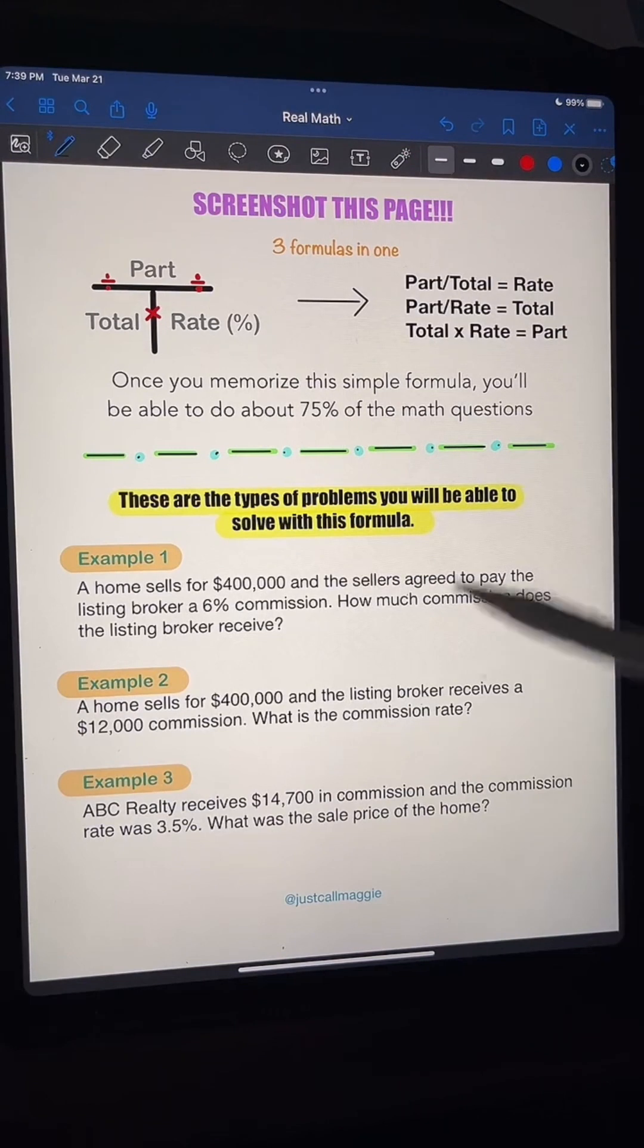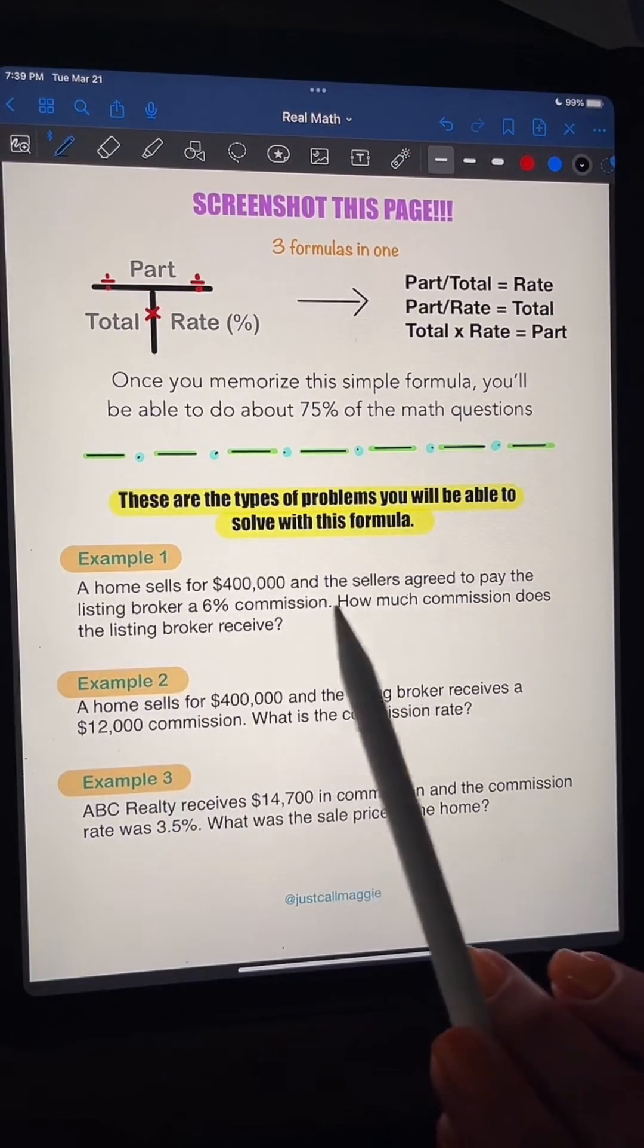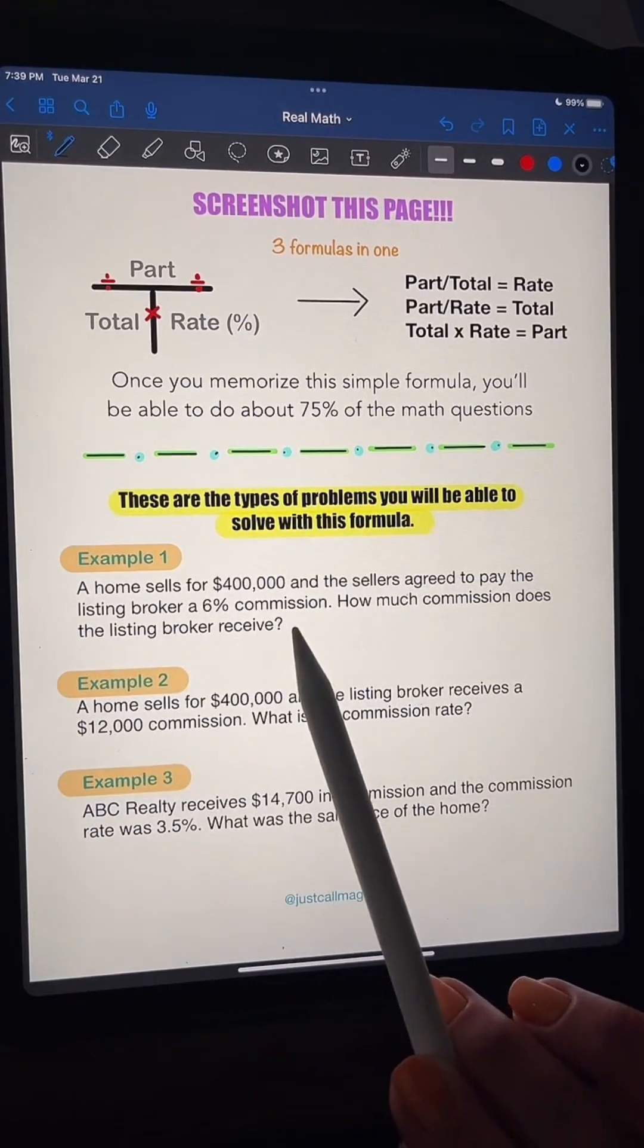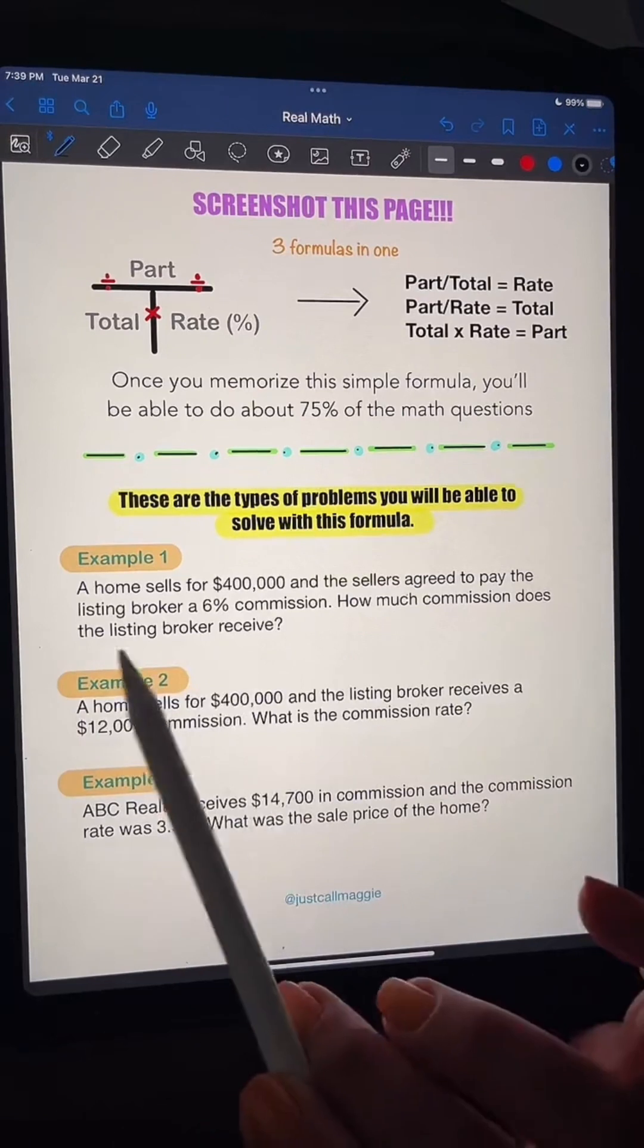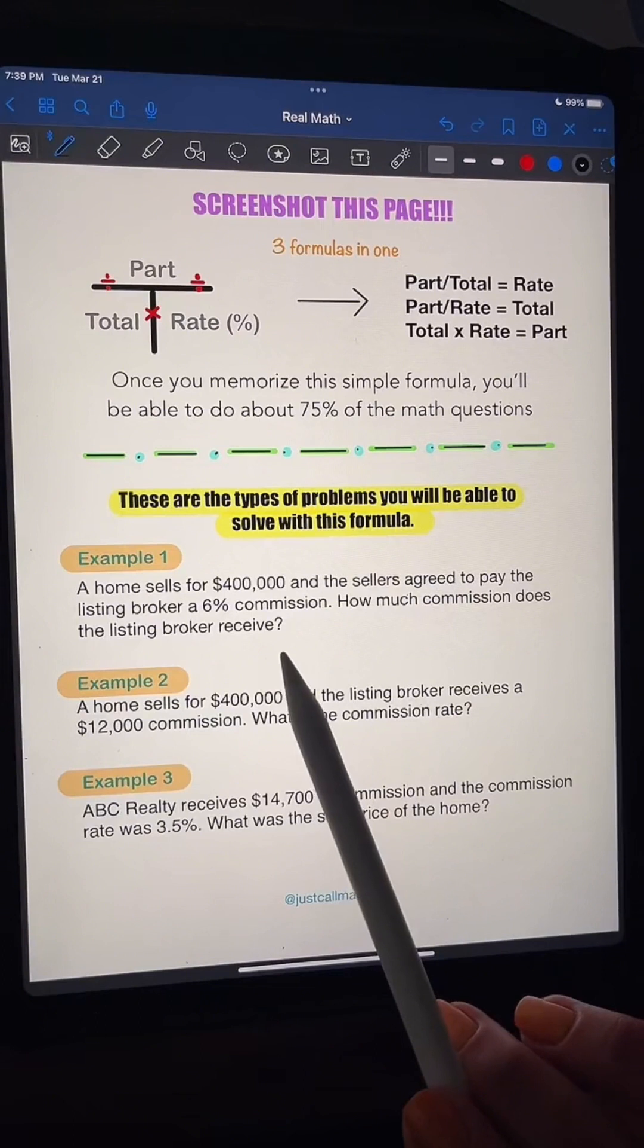So let's look at this here. It says example one, a home sells for $400,000, and the sellers agreed to pay the listing broker a 6% commission. How much commission does the listing broker receive? Okay, we all know that those questions are going to be on there.